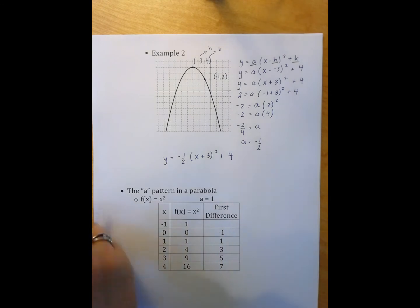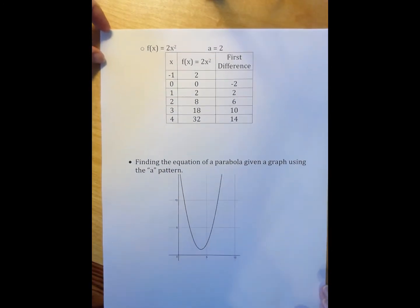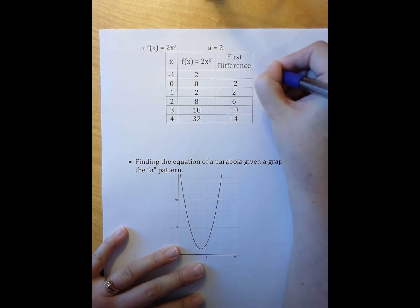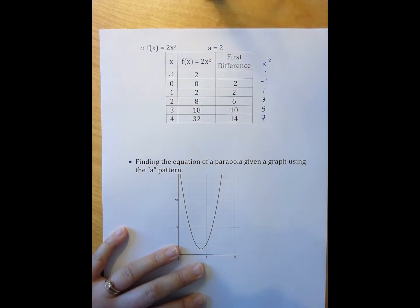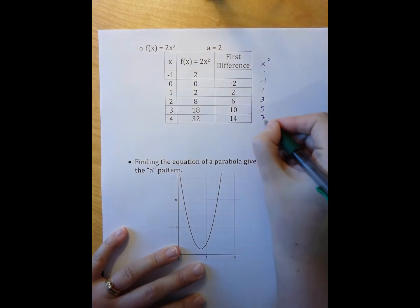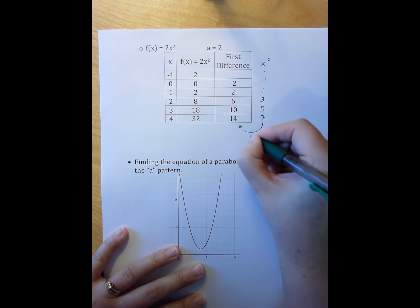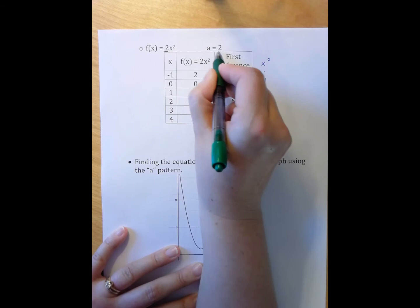Now, if we look at an example, however, where a is not 1, I need to sort of figure out what is happening here. So, if we remember from my previous problem, when I have just x squared, my pattern was negative 1, 1, 3, 5, 7. And if I look at this, I can see that in order to go from this column to this column, I'm multiplying by 2. And lo and behold, that's exactly what my a is.